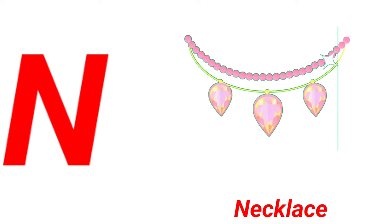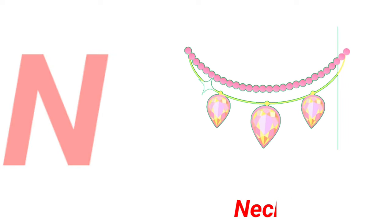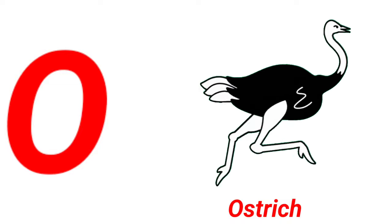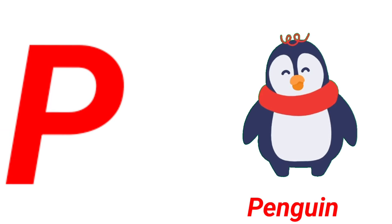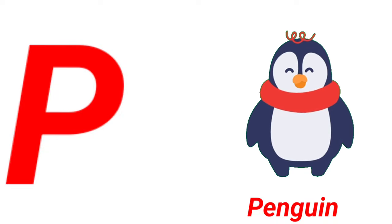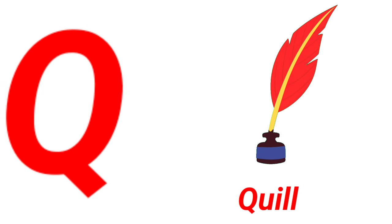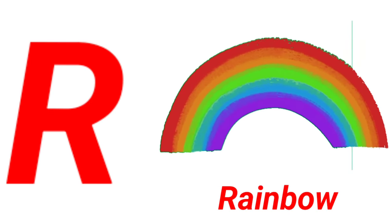N for necklace, O for ostrich, P for penguin, Q for queen, R for rainbow.